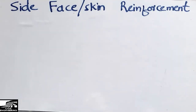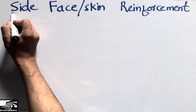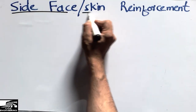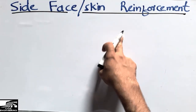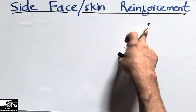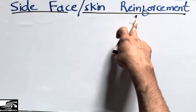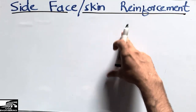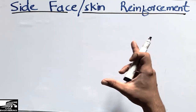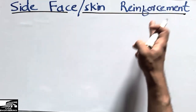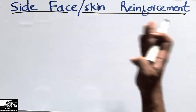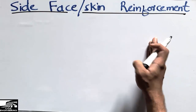Hello guys, welcome back to the Civil Engineering YouTube channel. Please subscribe our channel for more civil engineering updates. Today our lecture is about the side face or skin reinforcement. This is a special type of reinforcement used in beams, and it is used when the depth of the beam exceeds a certain limit, as per the recommendation of Indian codes and American codes.